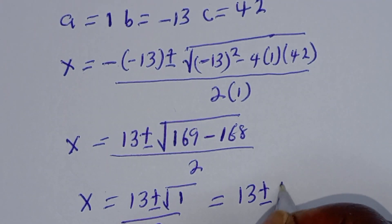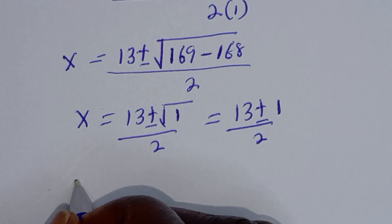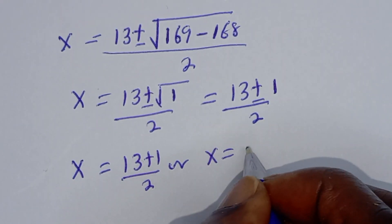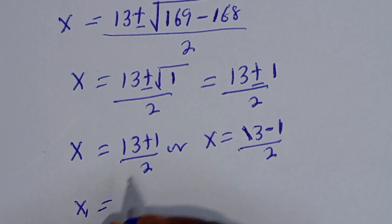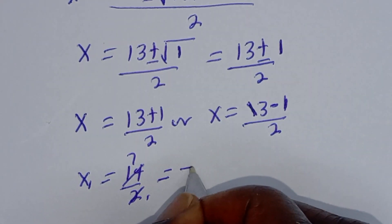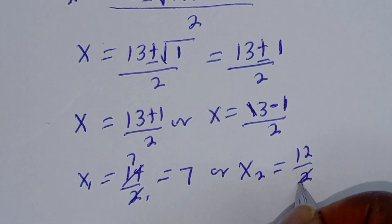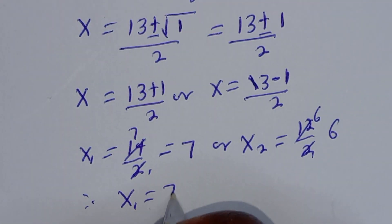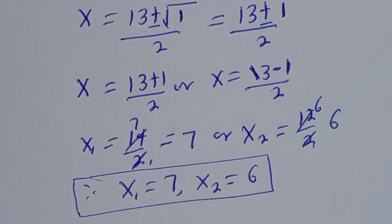So S is equal to 13 plus or minus 1, all over 2. Then S1 is equal to 13 plus 1, that is 14 over 2, which equals 7. Or S2 is equal to 13 minus 1, that is 12 over 2, which equals 6. Therefore S1 is equal to 7 and S2 is equal to 6.